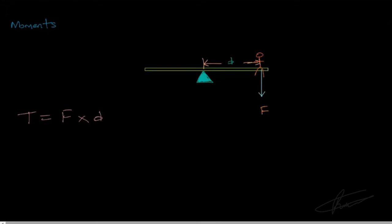So just to refresh: because of this force acting at a perpendicular distance from the line of action of the force — the force goes straight down and the distance is taken perpendicularly — the object experiences a turning effect about that particular point. We calculate the moment by multiplying the force by the perpendicular distance.